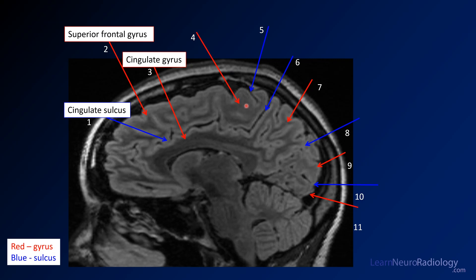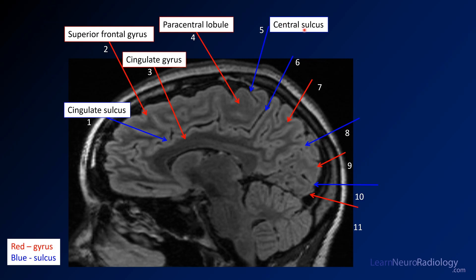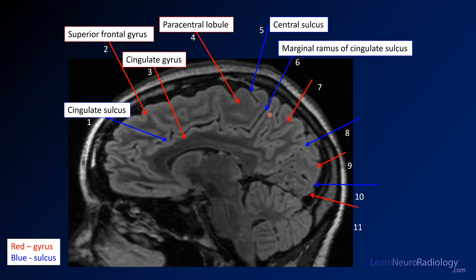A little bit further back, number four is the paracentral lobule — the portion of the brain connecting the pre- and post-central gyri. Here I'm pointing to the central sulcus, which you don't really see completely. And then here is a sulcus that connects to the cingulate sulcus — that's the marginal ramus of the cingulate sulcus, making this hockey-stick shape. This gyrus in the parietal lobe adjacent to the midline is the precuneus.